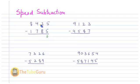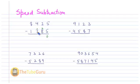Here we have two minus eight. It is not possible to subtract two from eight, so what I will do is take the complement of eight. The complement of eight is two. Whenever I take a complement of any digit, I put a dot on the next digit. Then I add these two numbers: two plus two equals four, so I write four here.